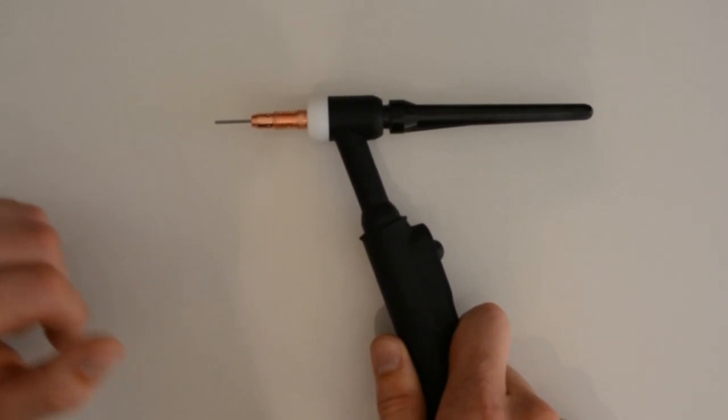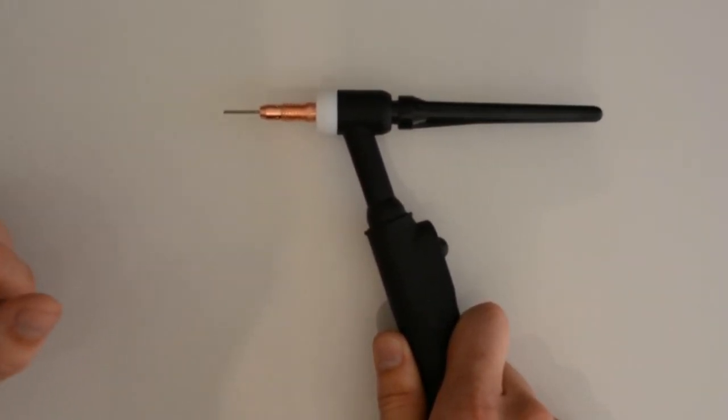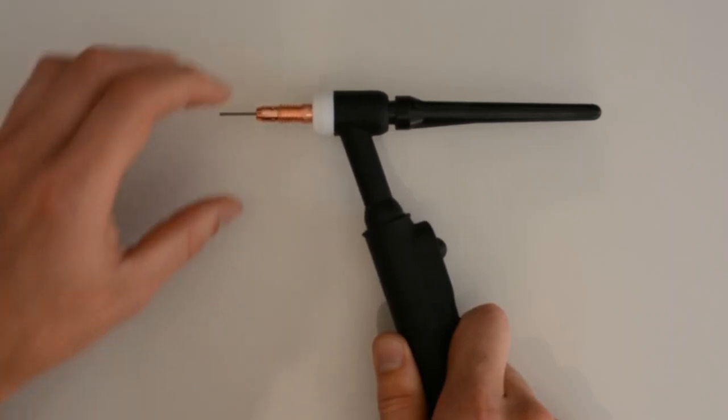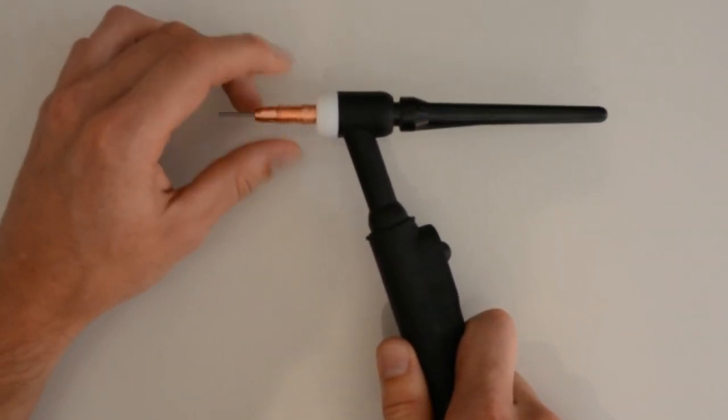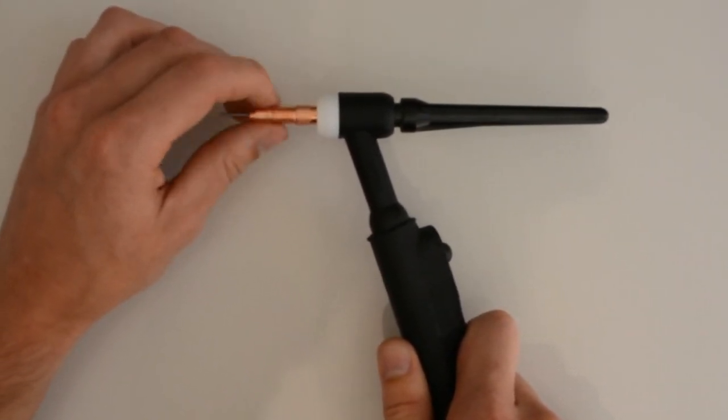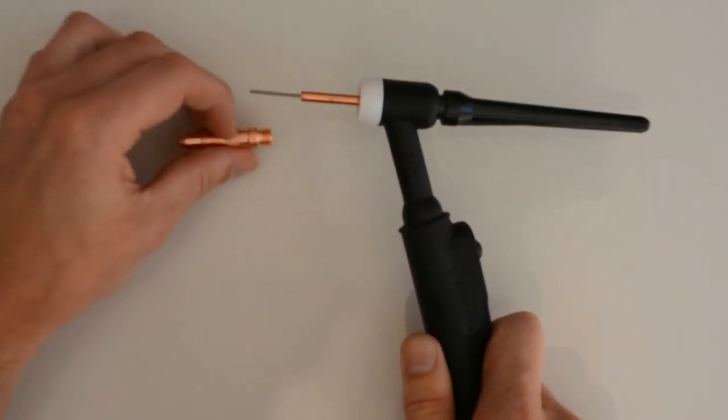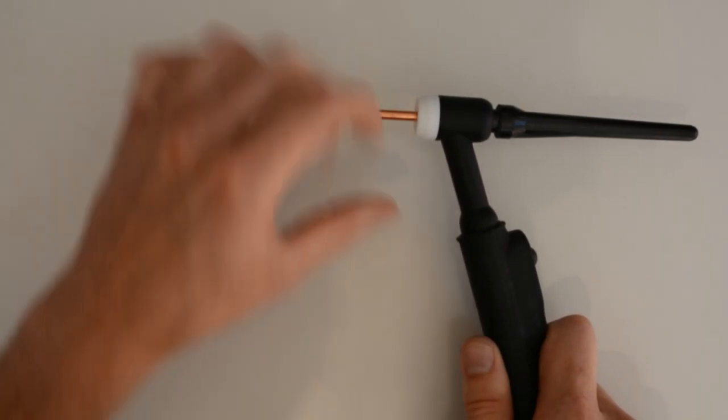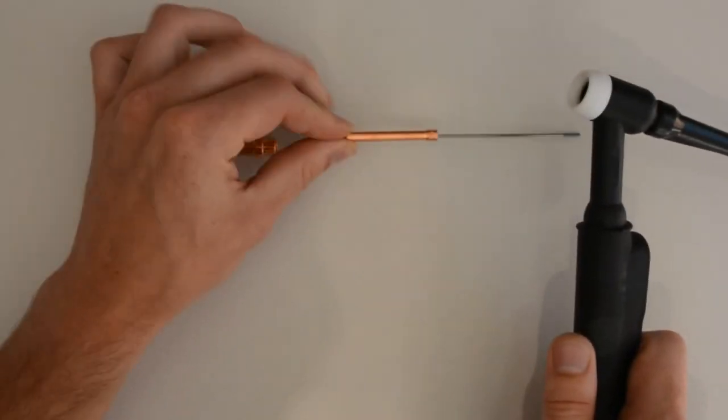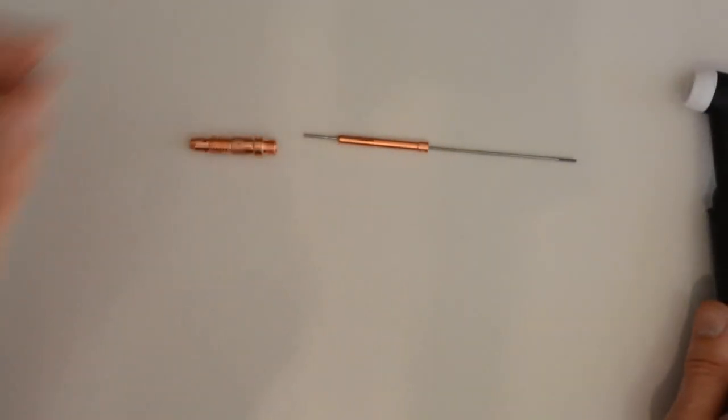So now we've taken the ceramic off, you can see underneath is the collet body and the tungsten out of the end there. We can just unscrew the collet body there and underneath that you will see the collet and the tungsten which will easily just pop out of the torch.